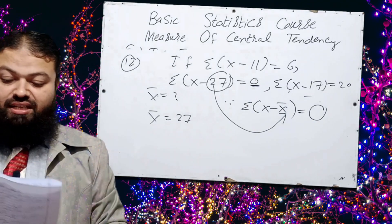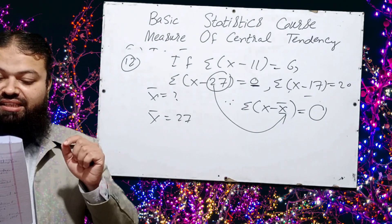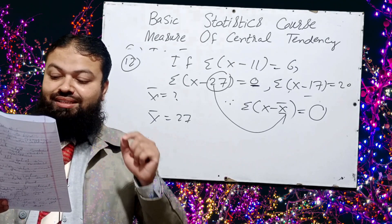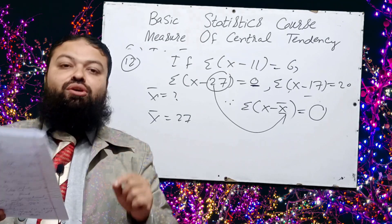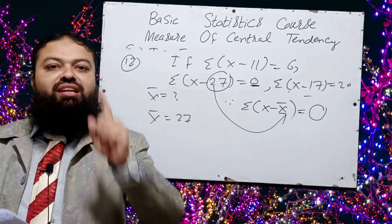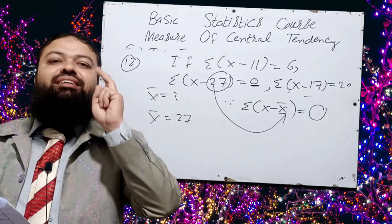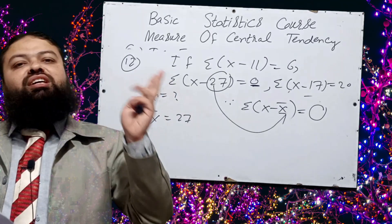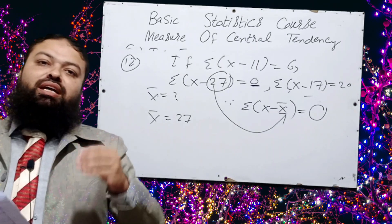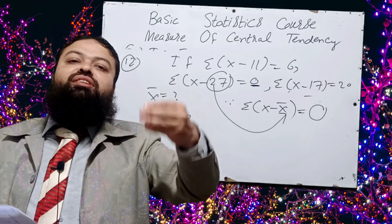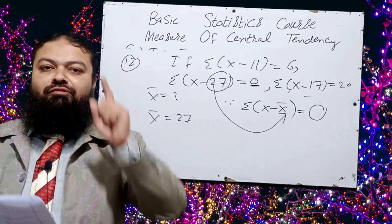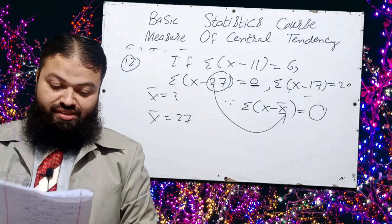Question number thirteen: if a distribution has three modes it is called tri-modal; one mode is uni-modal; two modes is bi-modal; more than three modes is multi-modal. A very important multiple choice question.